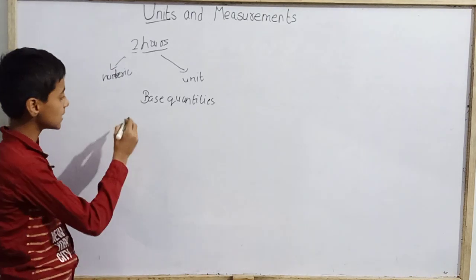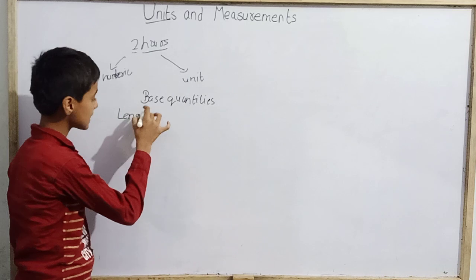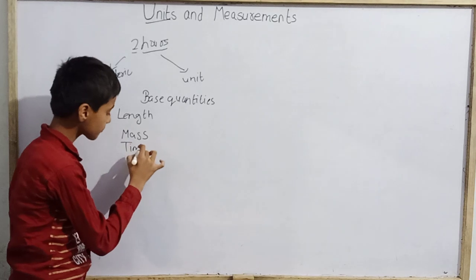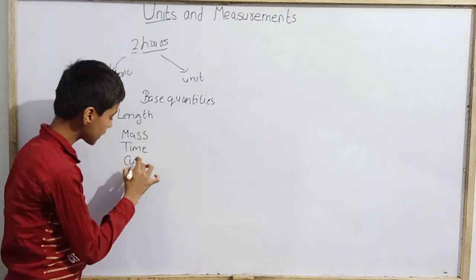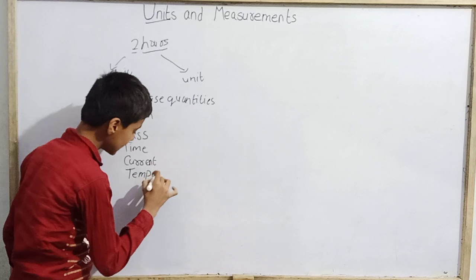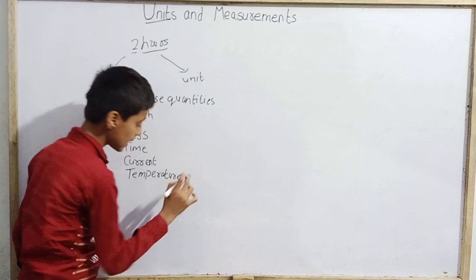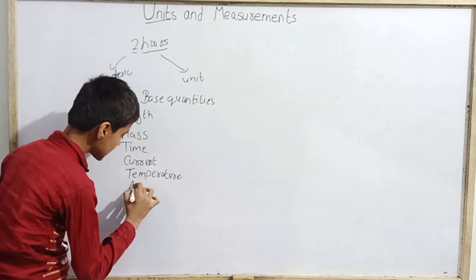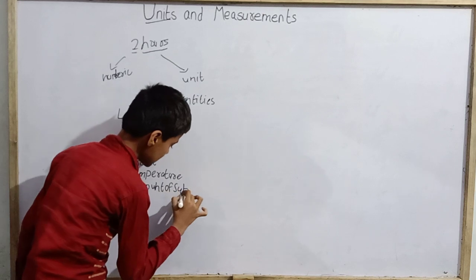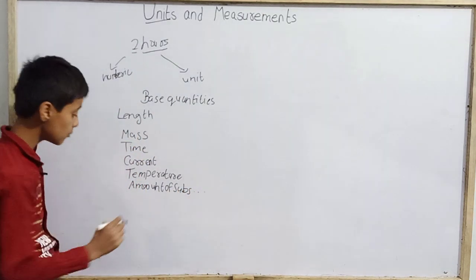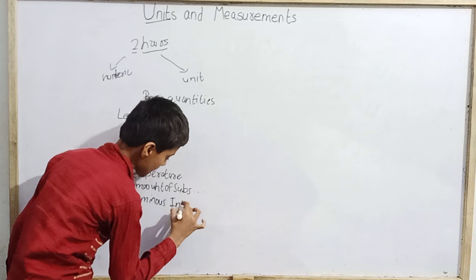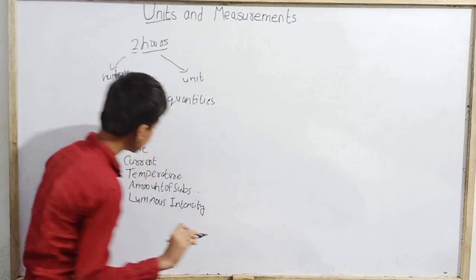That is why they are called base quantities. We have 7 quantities: first is length, second is mass, then time, then electric current, then thermodynamic temperature, then amount of substance, and finally luminous intensity.